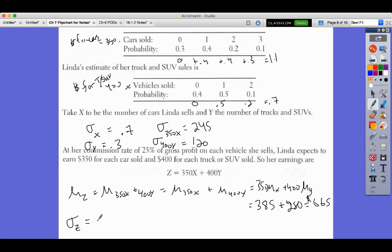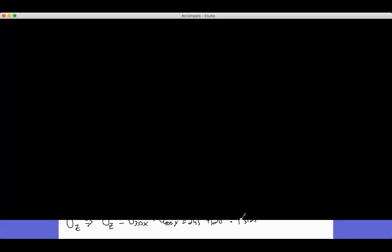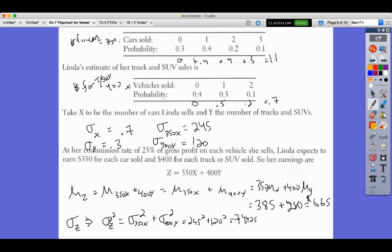And now, if I wanted the sigma of z, we would need, well, we can get sigma of z squared. The variance of z equals the variance of 350x plus the variance of 400y. So, we'd have to do 245 squared plus 120 squared, and we're getting 74,425.